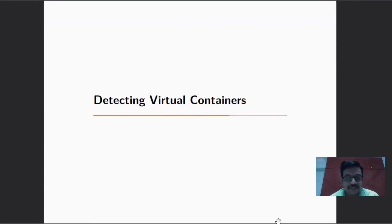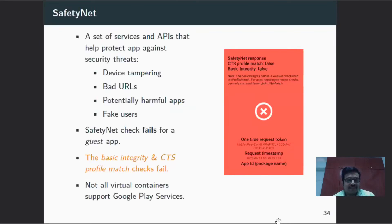Given these security implications, the first detection mechanism is SafetyNet — a set of services and APIs that helps determine device integrity, used by security-sensitive applications. Inside the container, when a guest application calls the SafetyNet API, the result shows CTS profile match as false and basic integrity as false, indicating a compromised environment. However, not all virtual containers support Google Play Services, so SafetyNet alone cannot be fully relied upon.